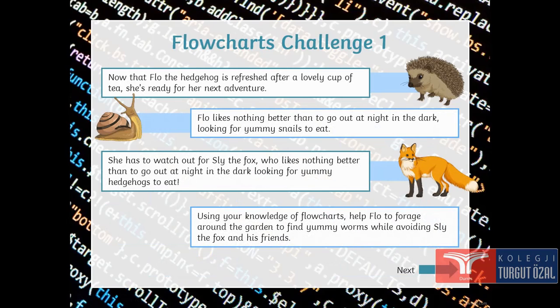Now, flow chart challenge one. Now that Flow is refreshed after a lovely cup of tea, she is ready for the next adventure. Flow likes nothing better than go out at night in the dark looking for yummy hedgehogs to eat. She has to watch out for Sly the fox who likes nothing better than yummy hedgehogs to eat. Using the knowledge of flow charts, help Flow to forage around the garden to find yummy worms while avoiding Sly, the fox and his friends.